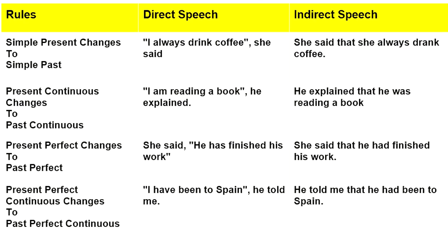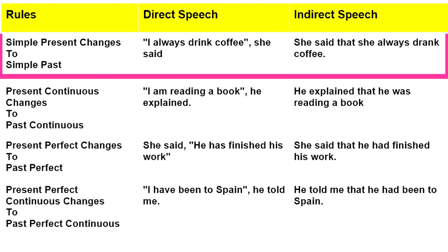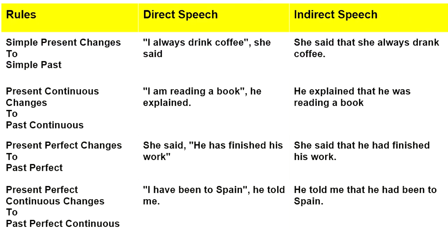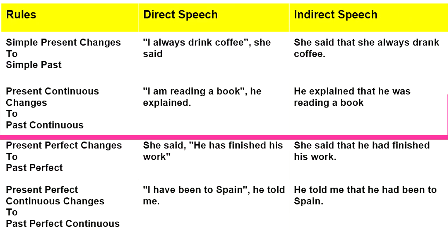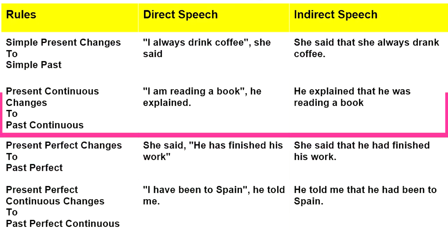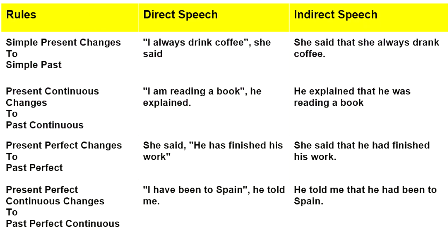Now let's understand the change in tense. First rule: simple present changes to simple past. For example: 'I always drink coffee,' she said. In indirect speech: she said that she always drank coffee. Second rule: present continuous changes to past continuous. For example: 'I am reading a book,' he explained. In indirect speech: he explained that he was reading a book.